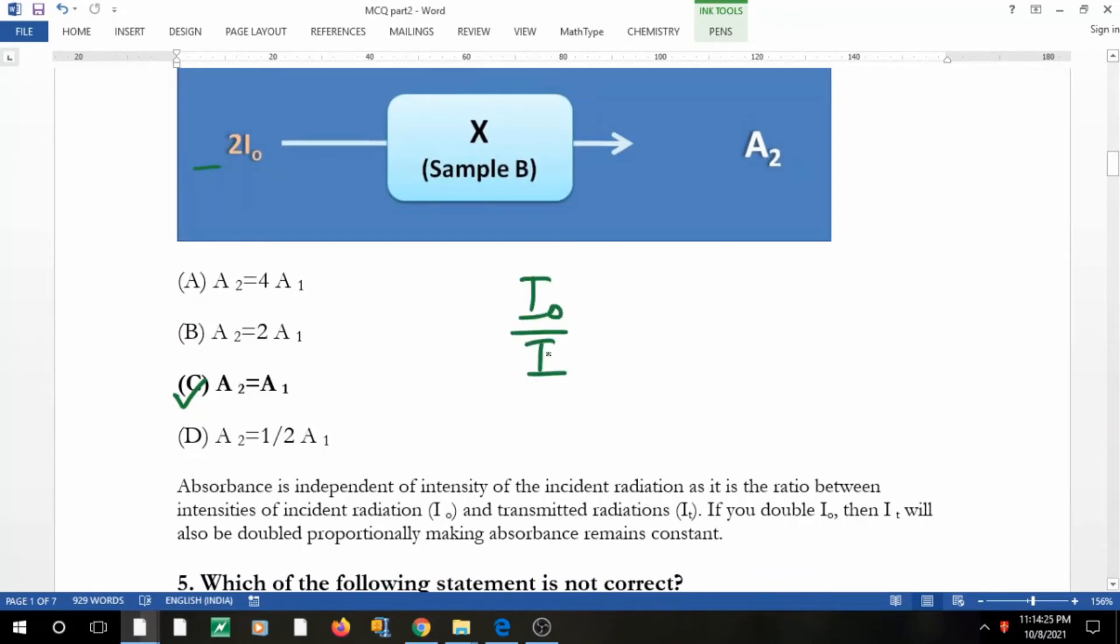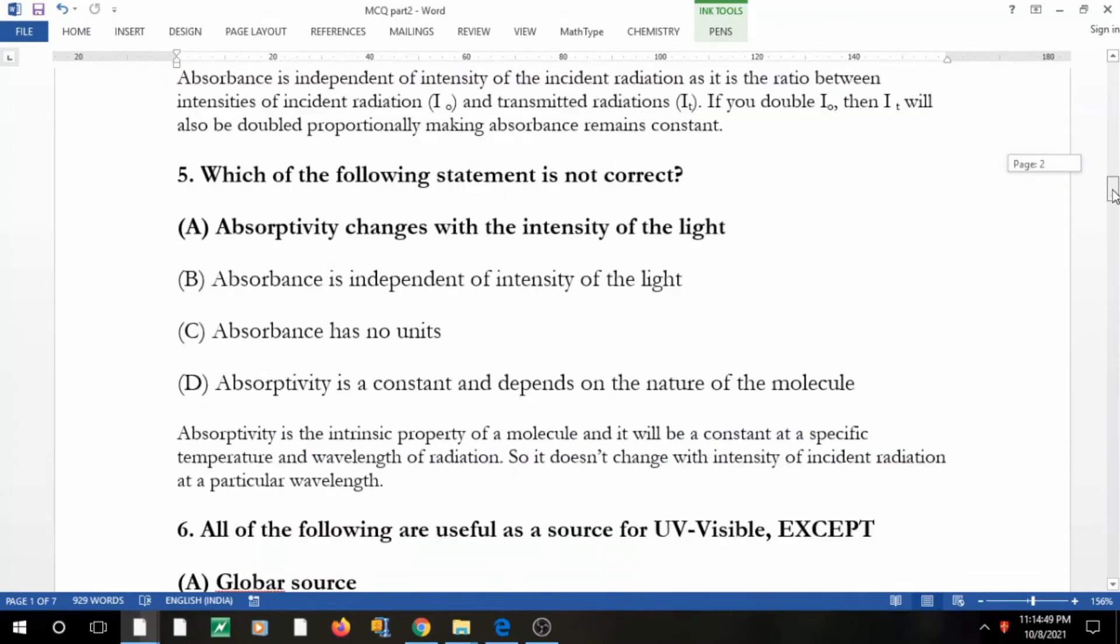It is the ratio of I naught to I. If this is double, this is double, so the proportionality has no change. The values would be same. It varies if the concentration is different. It's proportional to concentration and to the length. If this changes it may change, but when intensity changes it does not change.